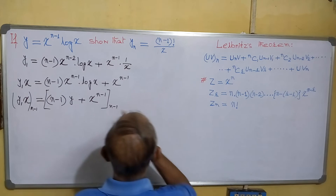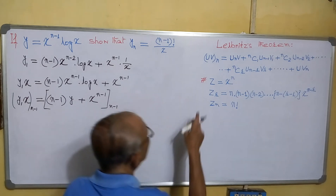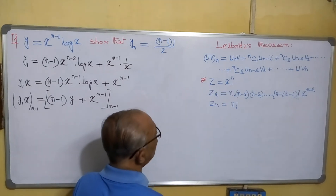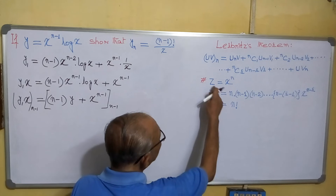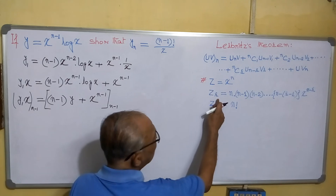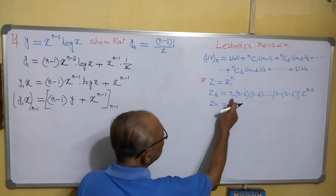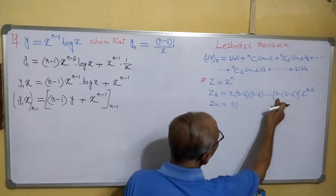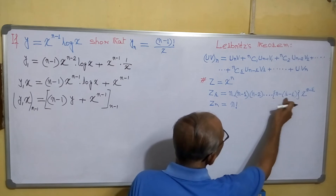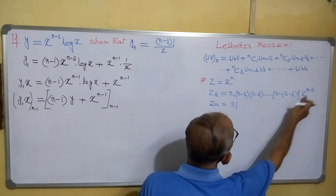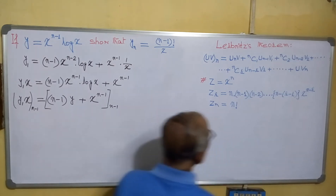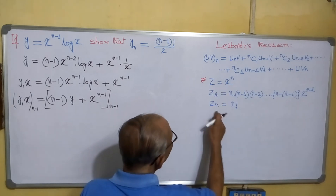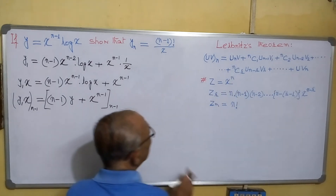One more thing we will apply here. If j equals x to the power n, then what will be its r-th derivative? The r-th derivative will be n·(n-1)·(n-2)·...·(n-r+1) into x to the power n minus r. And its nth derivative will be factorial n.